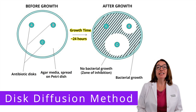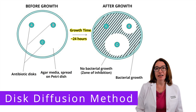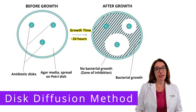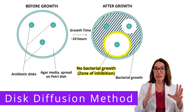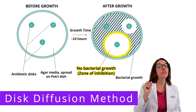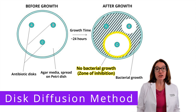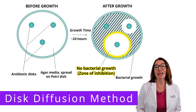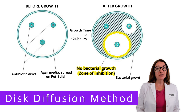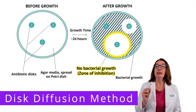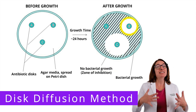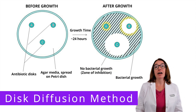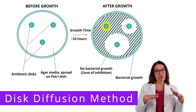The agar plate is then incubated and assessed. If a chemical is effective, a large clear area will be observed around the disc — this is the zone of inhibition. The larger the zone, the more effective the agent is. As you can see in the image, antibiotic C was the most effective at inhibiting this particular bacteria, antibiotic B was somewhat effective, and antibiotic A was not at all effective.